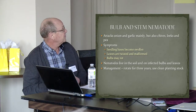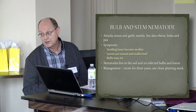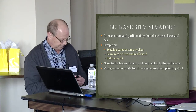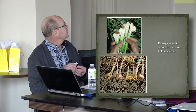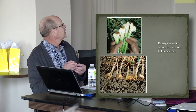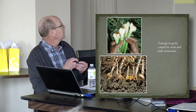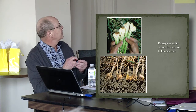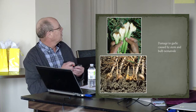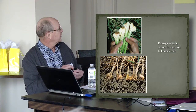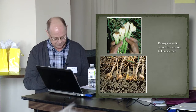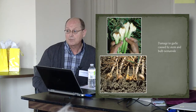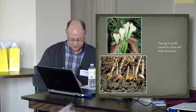Management is rotation for three years and again use of clean planting stock. If the infections take place early, you get a bulb rot — as you can see in both these images. It causes a severe bulb rot, and the key thing to remember is it does cause a severe distortion of the foliage.